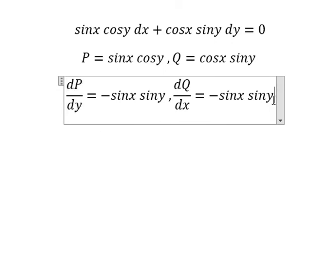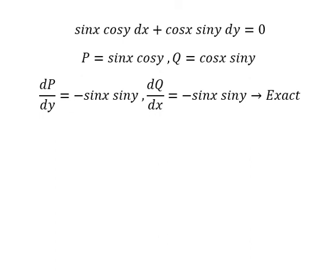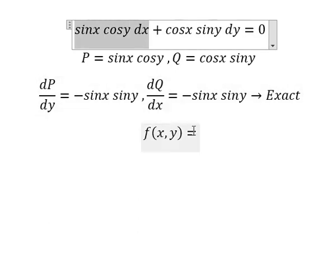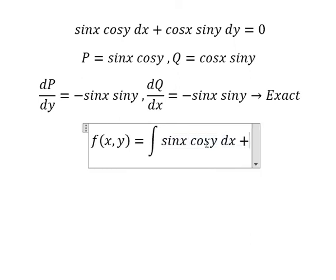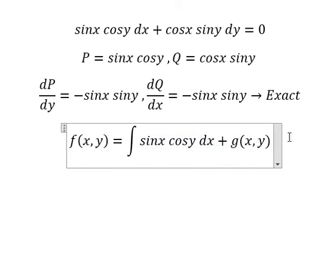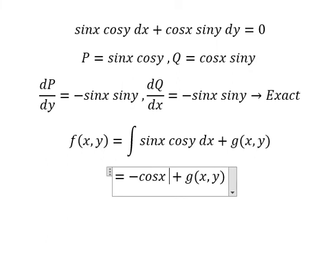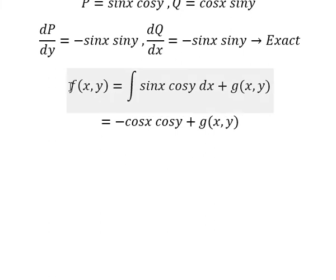And we know that this one and this one are the same, so that confirms it is exact. Now we need to set up the function f. I will choose this one, so I will put the integral here plus g. The integral of sin(x) gives us negative cos(y), next cos(y) y.